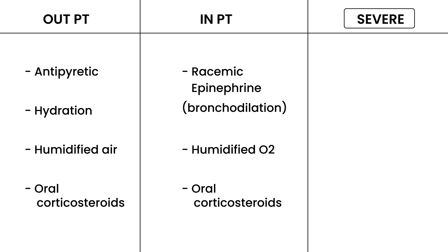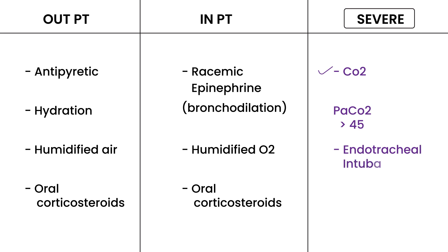In the most severe cases, where the child has increasing respiratory distress and fatigue, you really need to check CO2 levels. If the arterial CO2 level is greater than 45, that means the child is getting very tired and having a very difficult time expelling CO2. In that situation, the child needs endotracheal intubation, which will give the child a break and allow the arterial blood gases to return to normal.